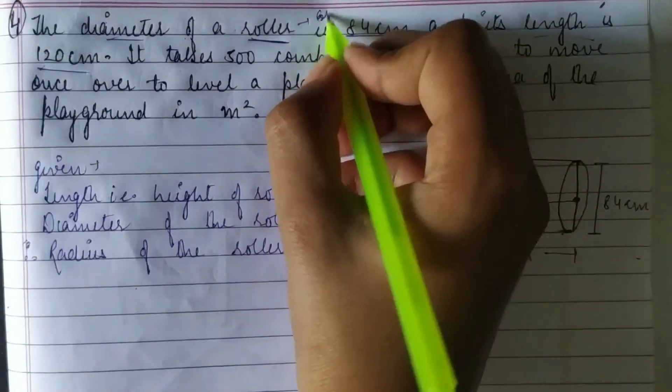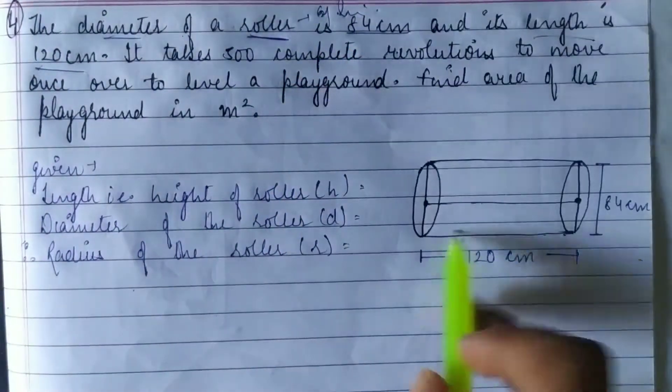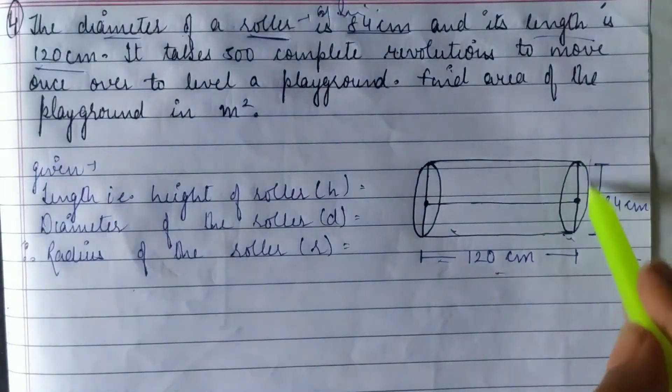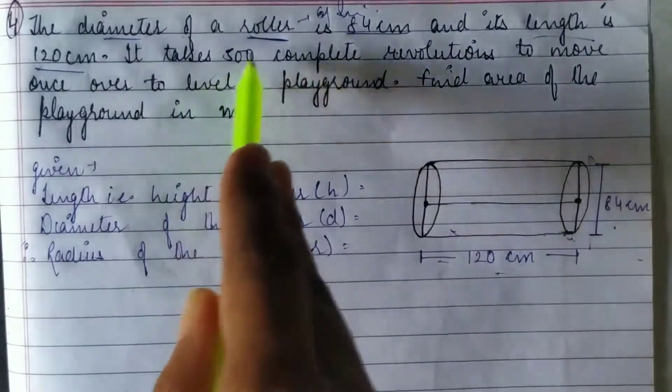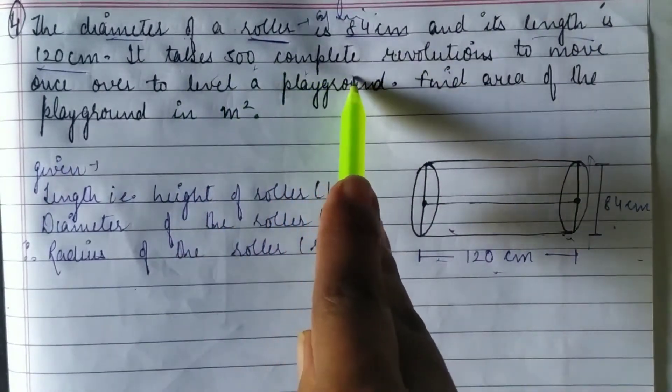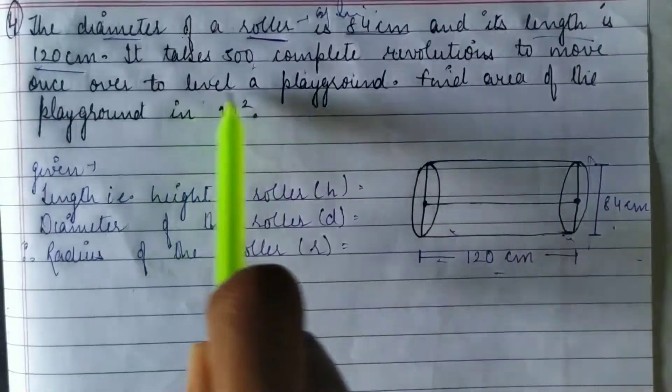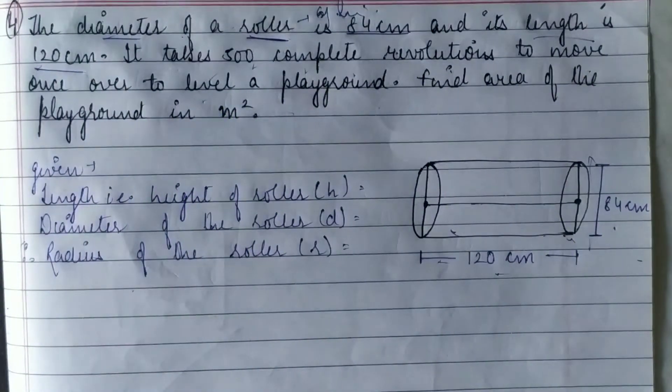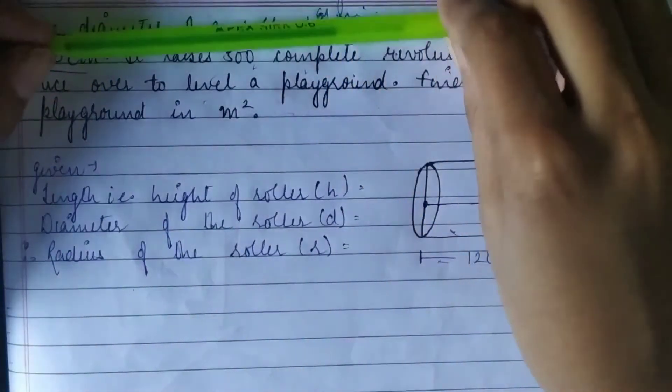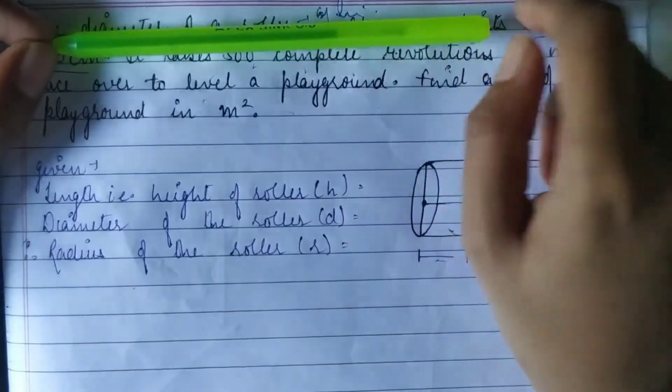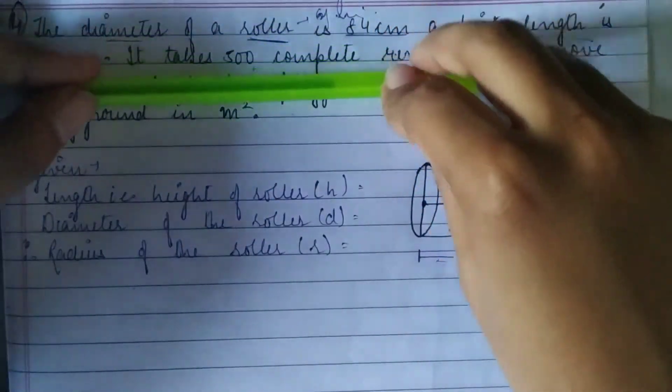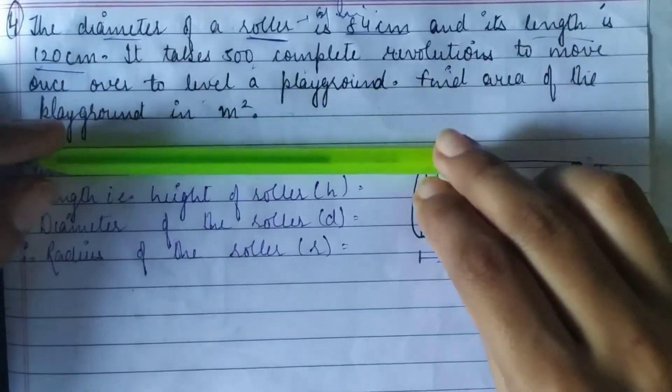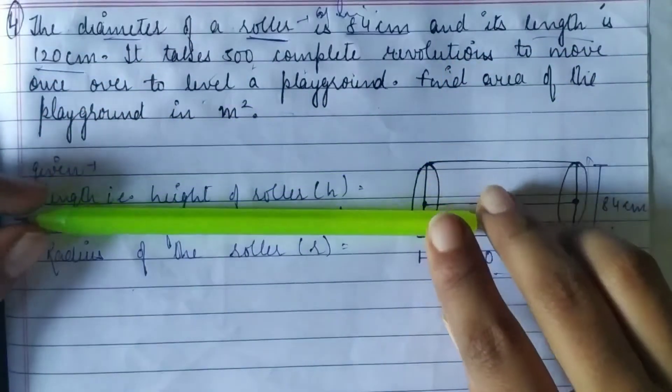We know that a roller is cylindrical in shape, so I have drawn the roller. Its length is 120 cm and diameter is 84 cm. It takes 500 complete revolutions to move once over to level a playground.